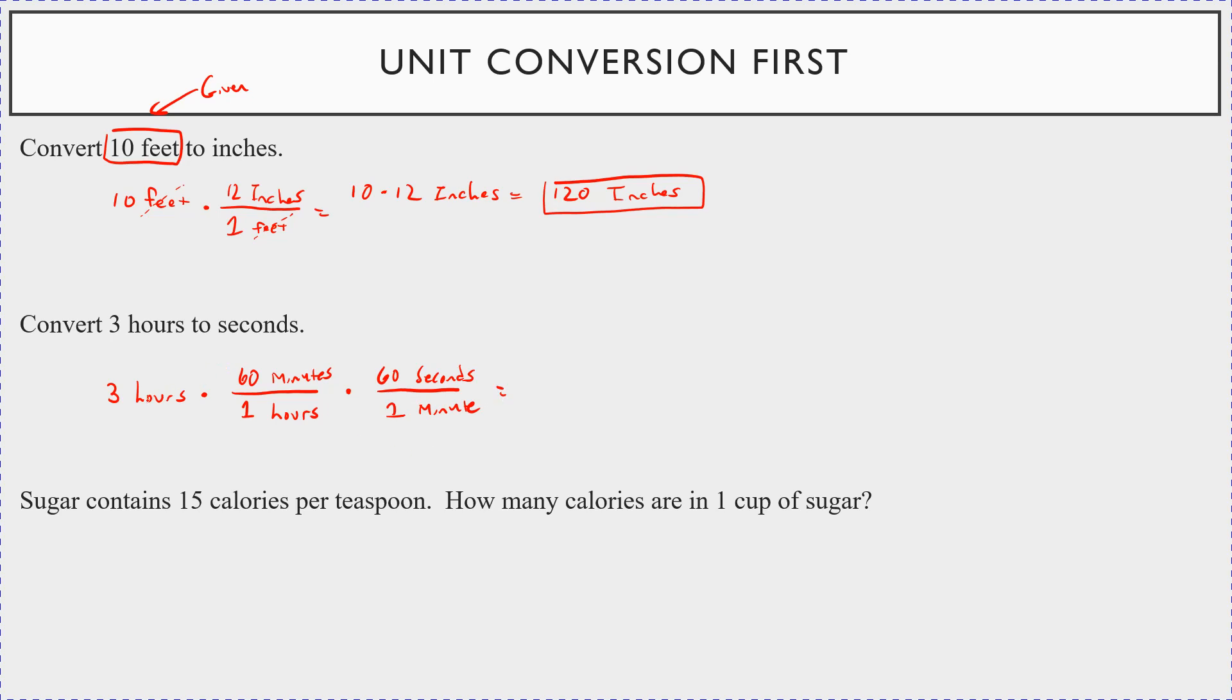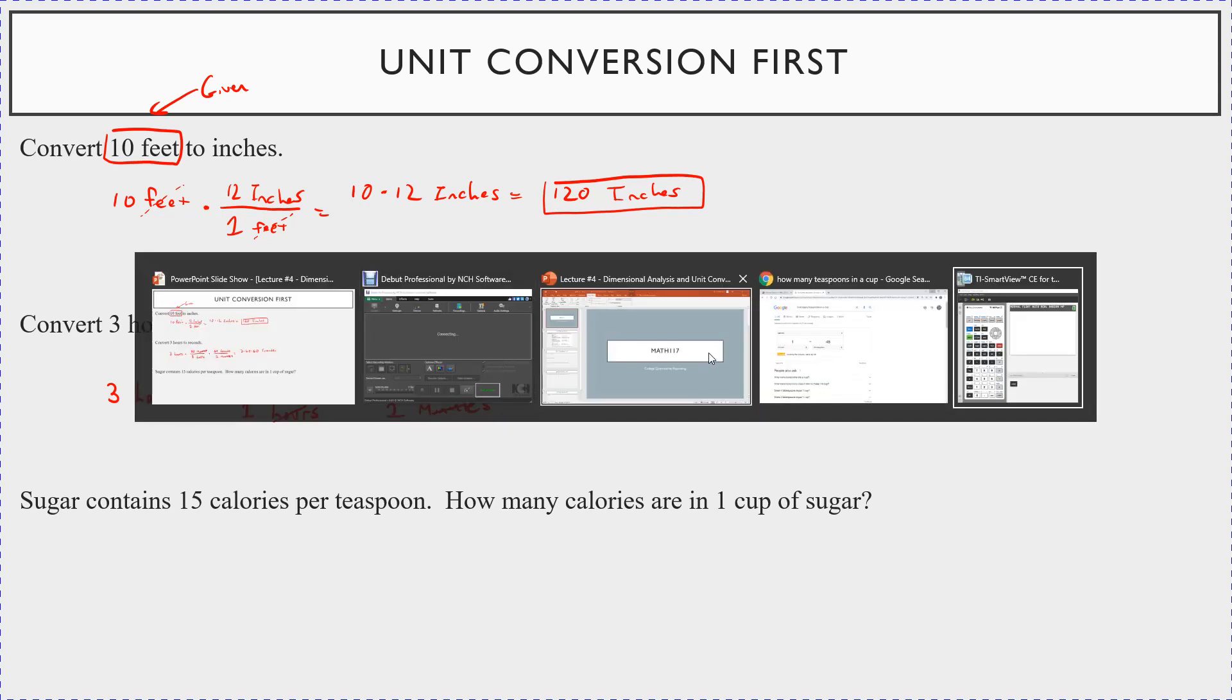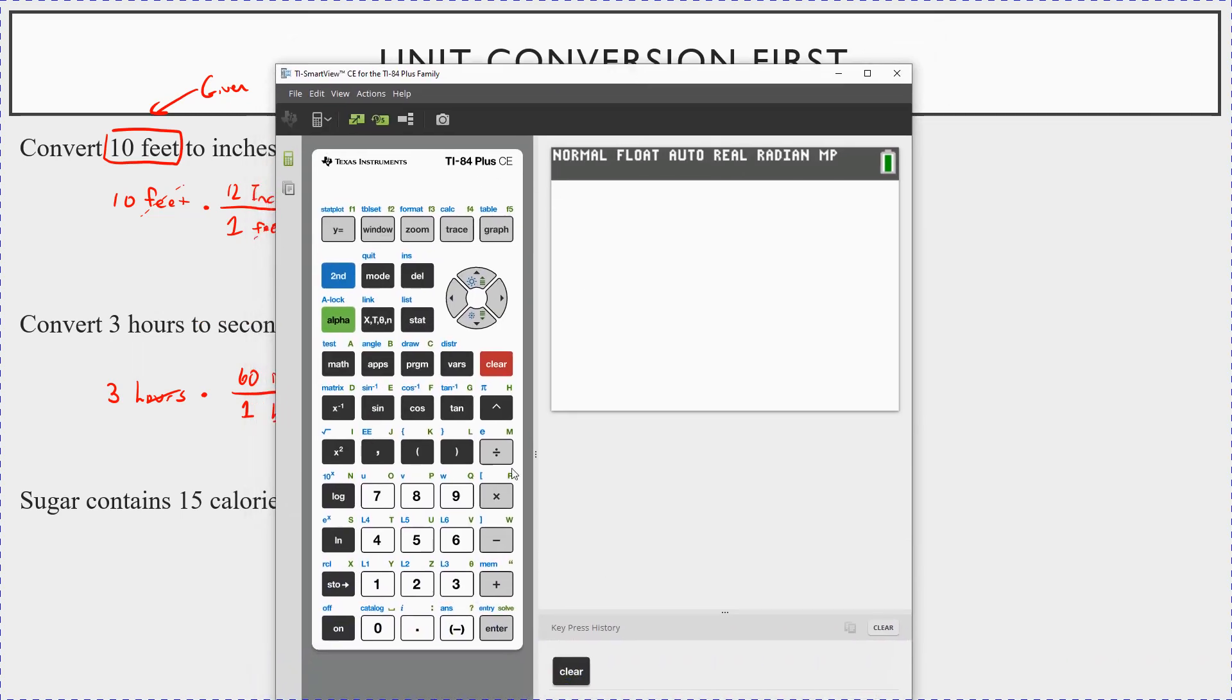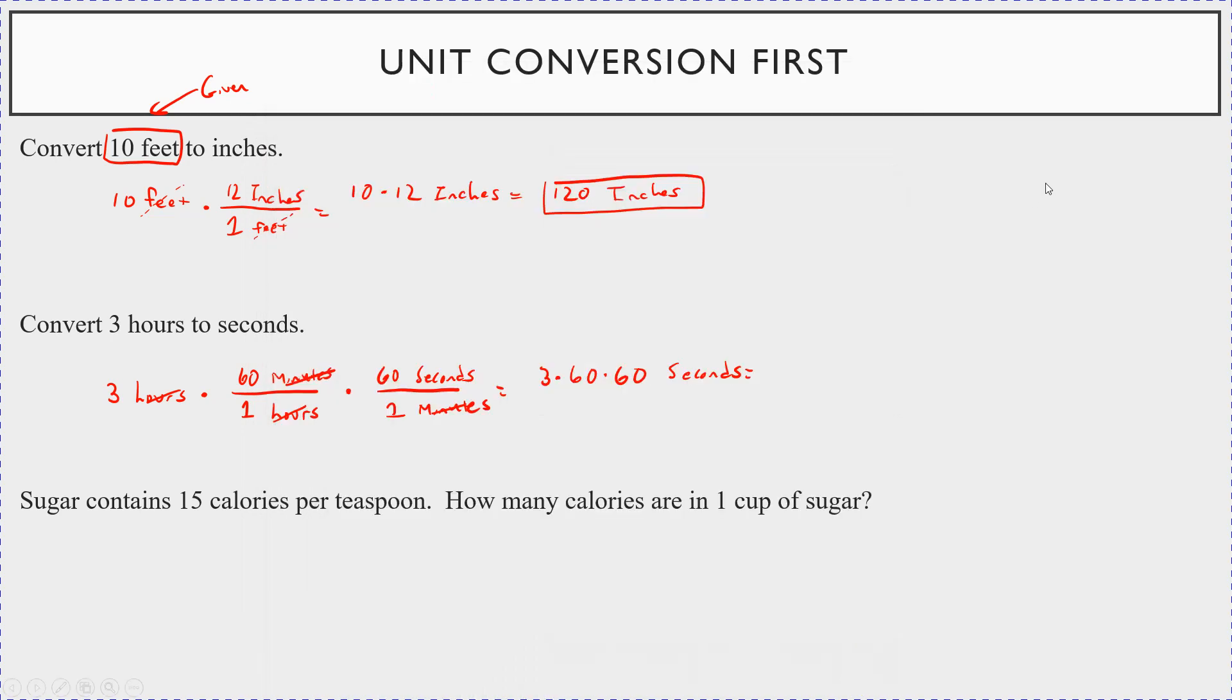There are 60 seconds in one minute. Now watch what happens. Hours, hours, minutes, minutes. Those cancel. So the only unit you're left with is seconds and that's what you wanted. So then you have three times 60 times 60. So grab your trusty calculator here for this. So you're going to go three times 60 times 60. And in three hours, there are 10,800 seconds.